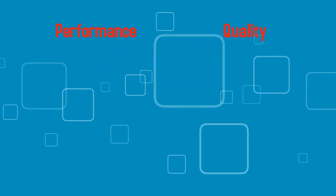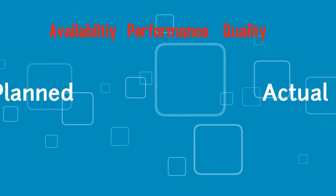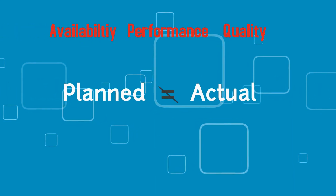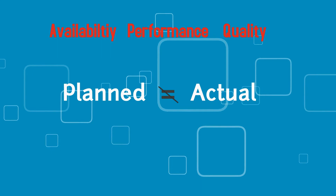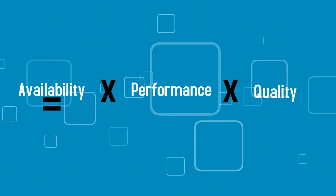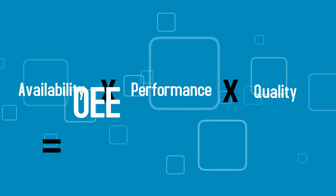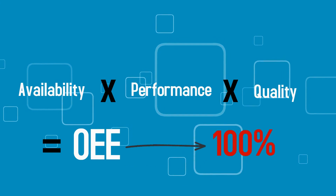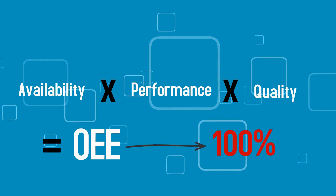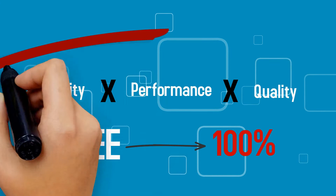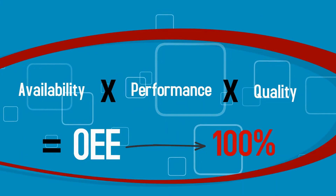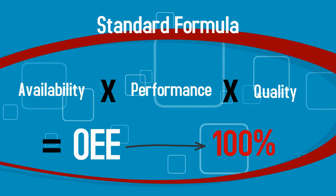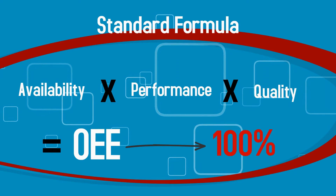These three components form the gap between a company's planned operating time and its actual production time. Multiplying the three factors together will produce your OEE percentage. The closer your OEE percentage is to 100, the more effective your equipment is. This is known as the standard formula and is the easiest method used for calculating OEE.